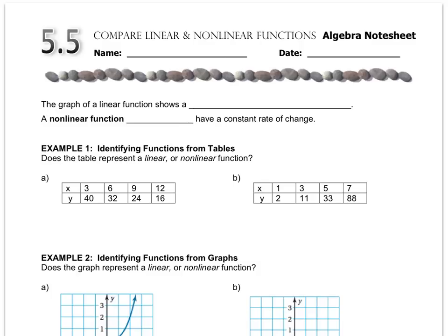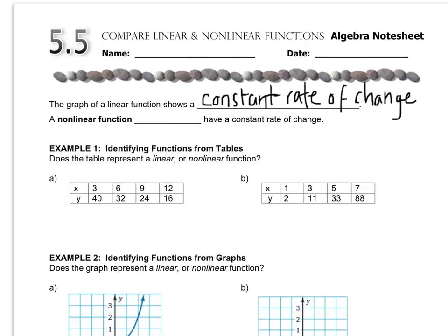In this lesson, we look at what makes something linear, and we compare two things that are not linear. The graph of a linear function shows a constant rate of change. So if something is non-linear, then it does not have a constant rate of change.